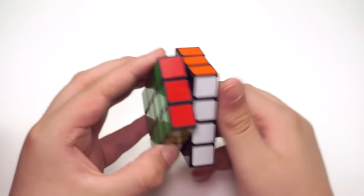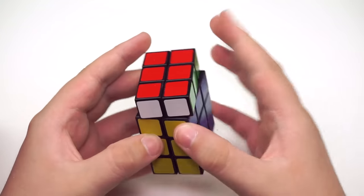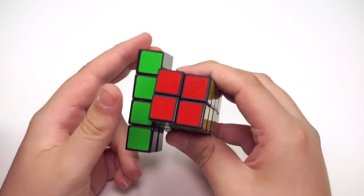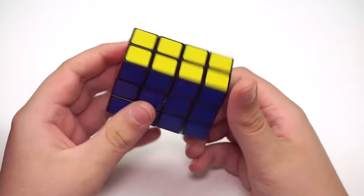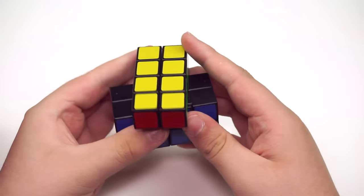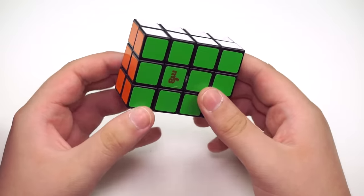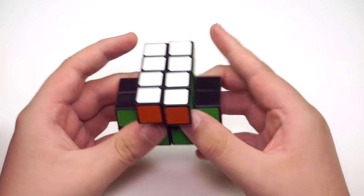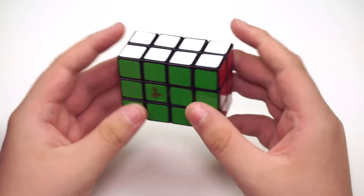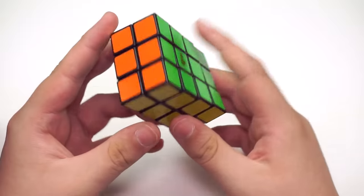This is the 2x3x4. This one does come stickered, luckily, and it turns pretty okay. It's going to need a little bit of lube, but it turns pretty well. I did used to have one of these as well a while ago, and it was pretty fun to solve. This one as well shapeshifts just like the 3x4x5. It's a fun little cuboid. These are called bricks, the 2x3x4.